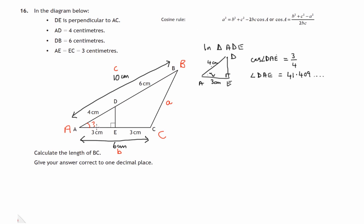So there's the first thing we know: this is 41.409 degrees. So let's now, in triangle ABC—it's the large triangle which is not right-angled—let's use the cosine rule.